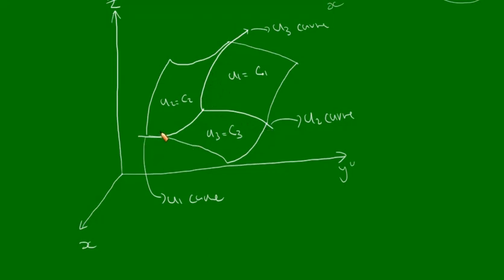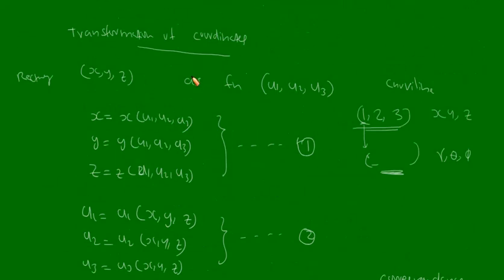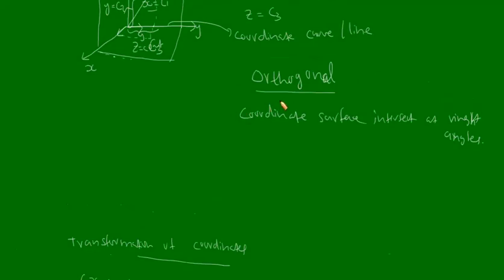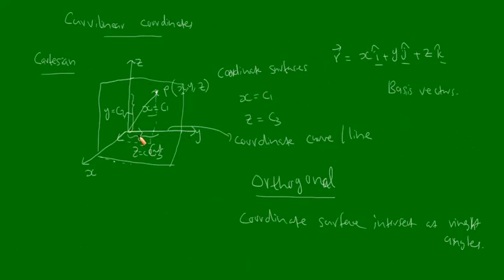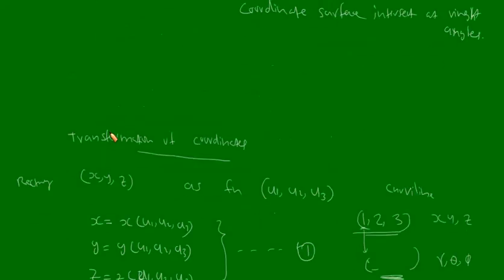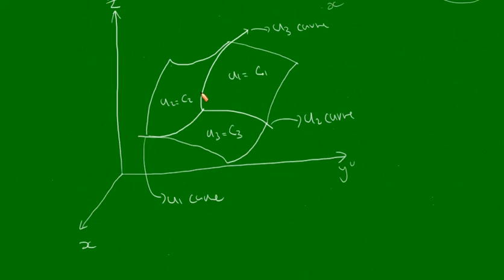If the coordinate surfaces intersect at right angles, then we call this curvilinear coordinate system an orthogonal curvilinear coordinate system. The Cartesian coordinate system is orthogonal because its axes are mutually perpendicular, so it is said to be an orthogonal curvilinear coordinate system.